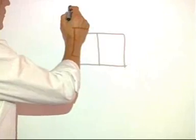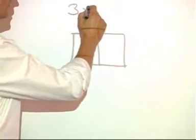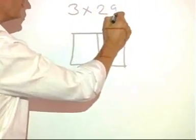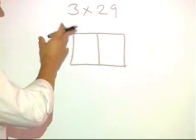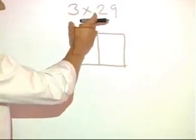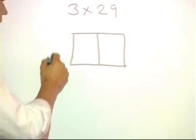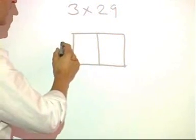So faced with the calculation, for example, 3 times 29, which might be too hard to do using mental strategies, the number can be split into 3 times 20 plus 3 times 9. And the grid method helps with the setting out.